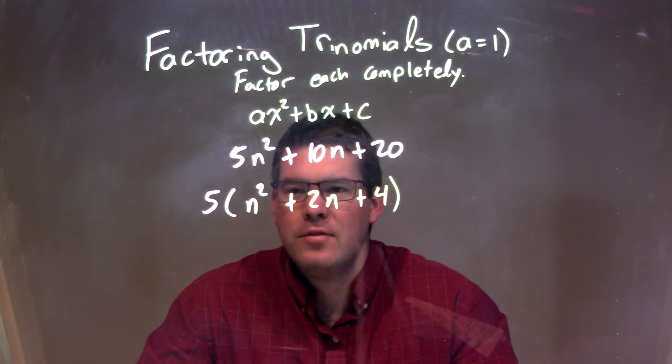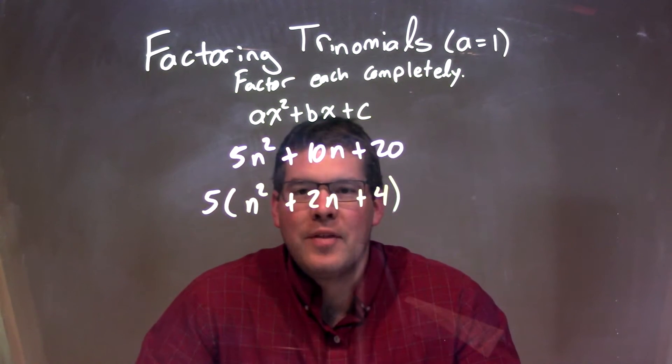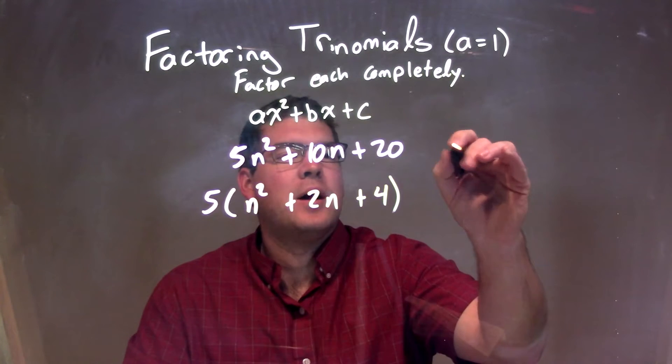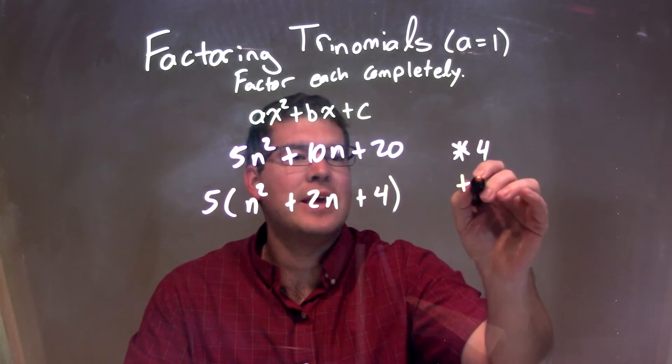Okay, so now we have 5 times (n² + 2n + 4). So we have to ask ourselves the question now: what multiplies to be a 4 but adds to be a 2?